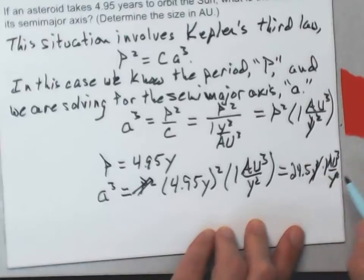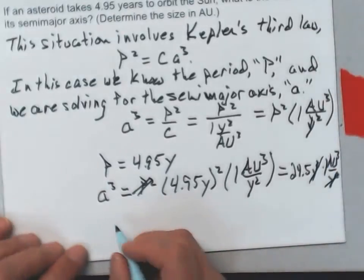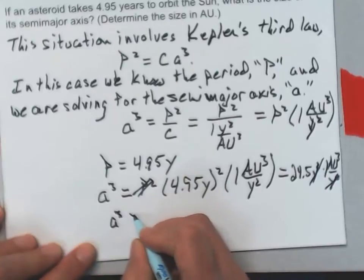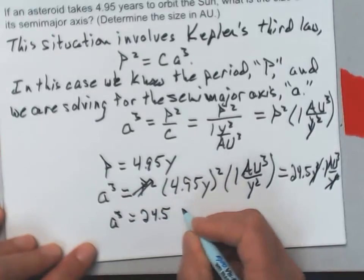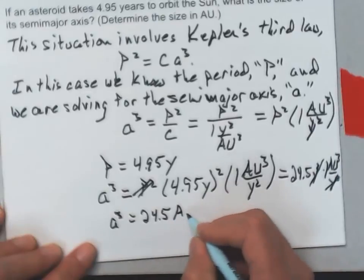I multiply that by that 1 AU cubed per year squared, these years squared divide with those years squared, and I get A cubed equals 24.5 AU cubed.